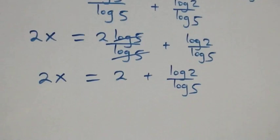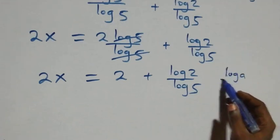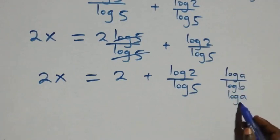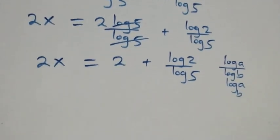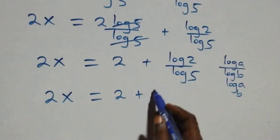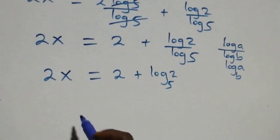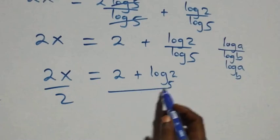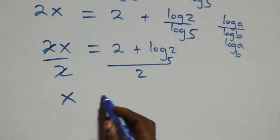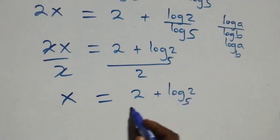We can apply the change of base formula: log a over log b is the same as log a to base b. So what we have becomes 2x equals 2 plus log 2 base 5. Next, divide both sides by 2 — the 2s cancel on the left — and we have x equals 2 plus log₅2, all over 2.